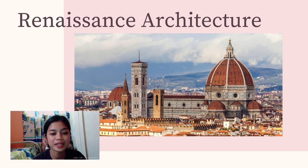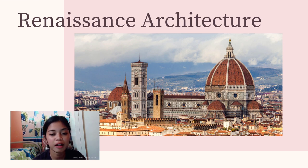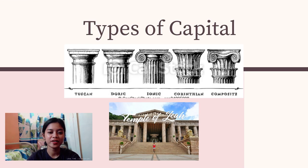Florence was considered as the birthplace of the Renaissance, becoming a major artistic, cultural, commercial, political, economic, and financial center. Renaissance architecture also incorporated columns and pilasters using Roman orders of columns — such as Tuscan, Doric, Ionic, Corinthian, and Composite — as models. The orders can either be structural, supporting an arcade or architrave, or purely decorative, set against a wall in the form of pilasters.